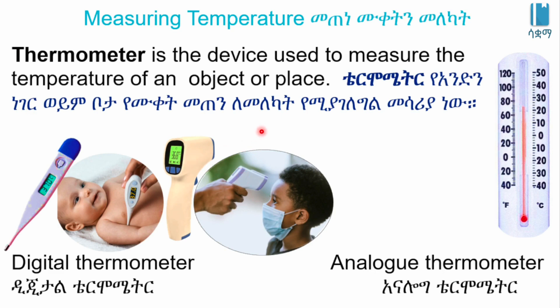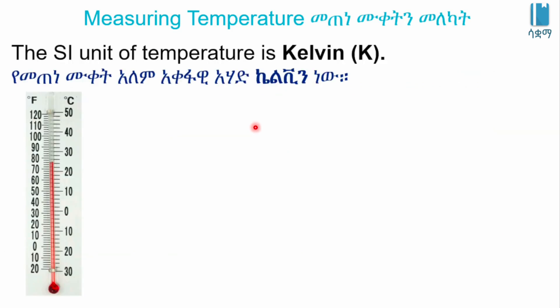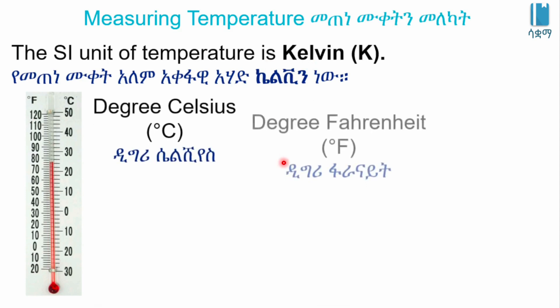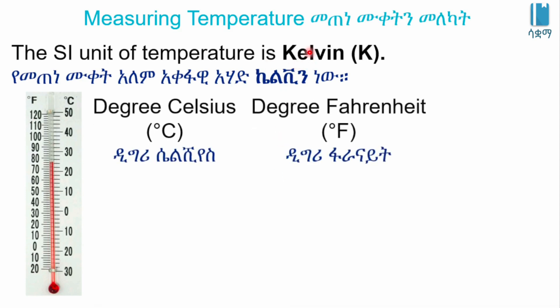The SI unit of temperature is Kelvin. One degree centigrade is equal to 1 K.